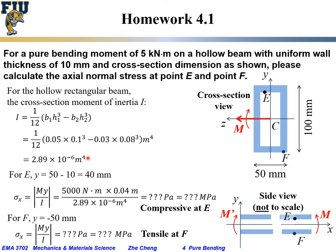For point E (upper, inside), the distance from E to the neutral axis is: half of 100 mm minus the wall thickness = 50 − 10 = 40 mm. The axial normal stress (absolute value) is σ = My/I, where M = 5000 N·m, y = 0.04 m, and I is the moment of inertia just calculated.